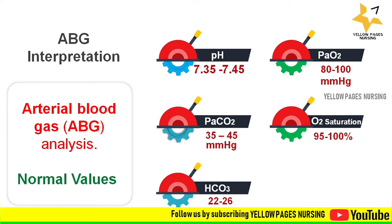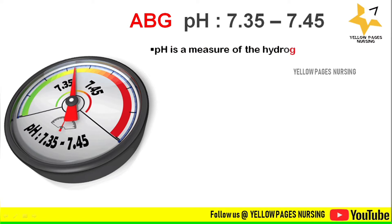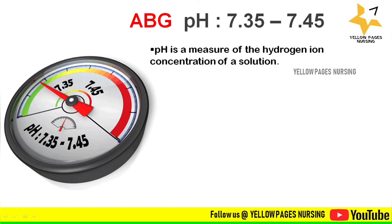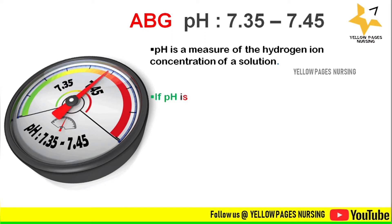By knowing the values of three parameters — pH, PaCO2, and bicarbonate — it is pretty enough to interpret an ABG. Let's discuss them one by one. pH is nothing but the measure of hydrogen ion concentration of a solution. The normal value of pH ranges between 7.35 to 7.45.